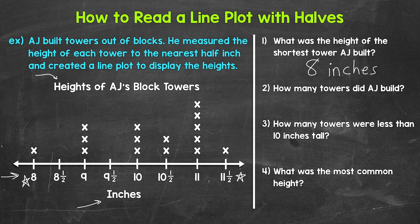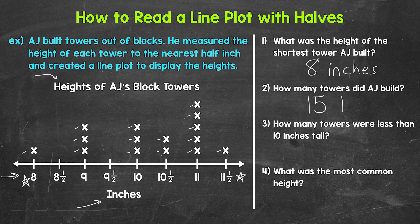Moving on to number two: how many towers did AJ build? We need to count all the total X's on the line plot, since each X represents a tower. Counting them all up, we get fifteen. So AJ built fifteen towers.